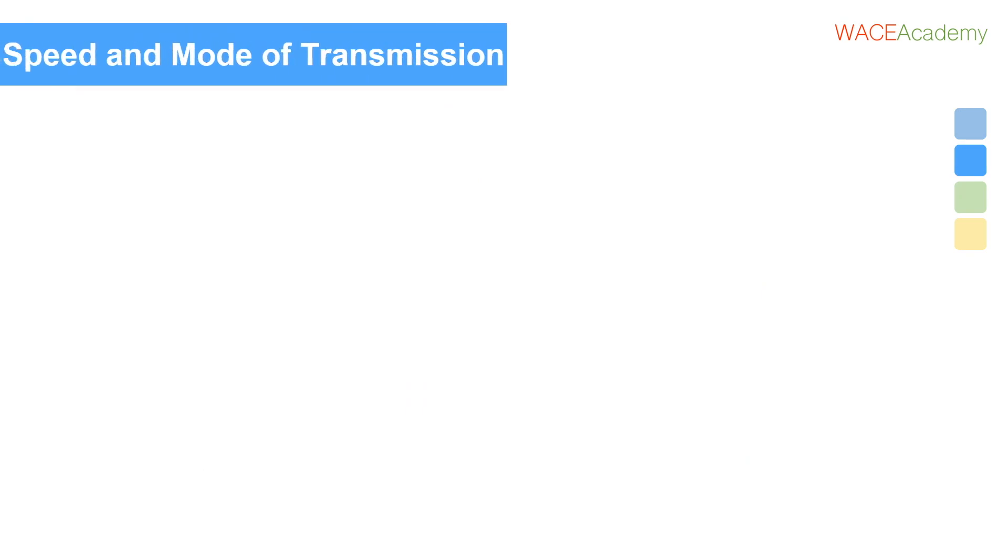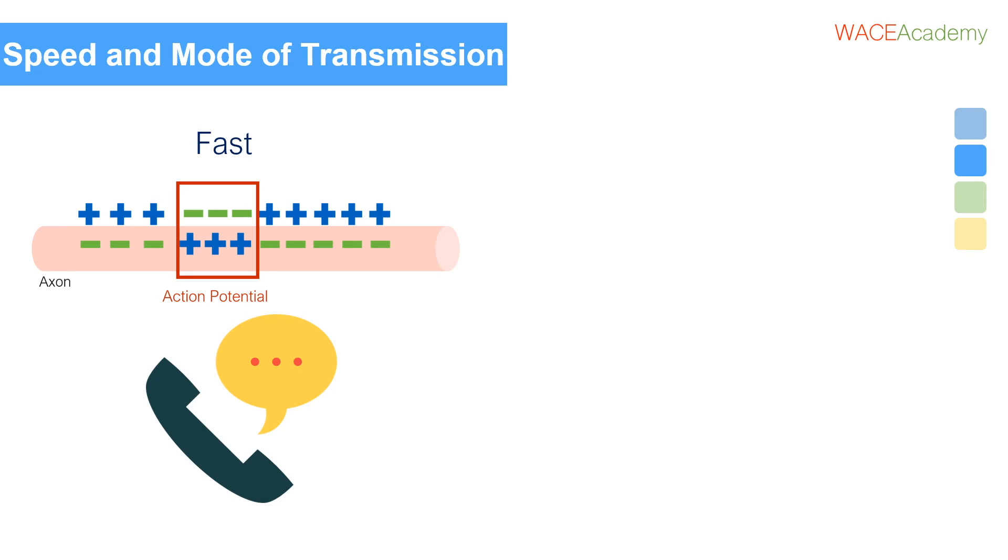First, let's talk about how fast their messages are. As you'll remember from the video on nerve impulses, the nervous system sends messages as electrical impulses through the body's nerve cells. This is really fast, like talking to your friend on the phone.